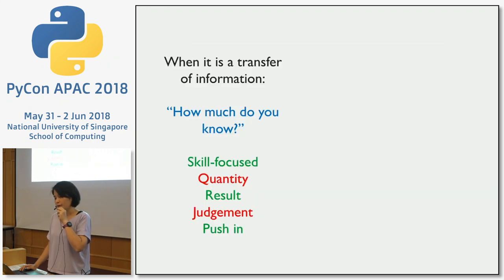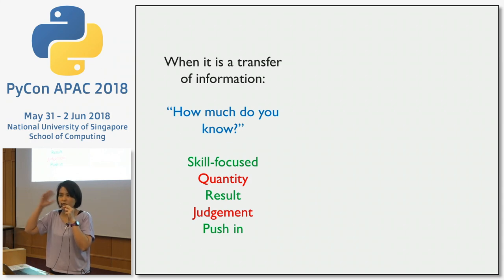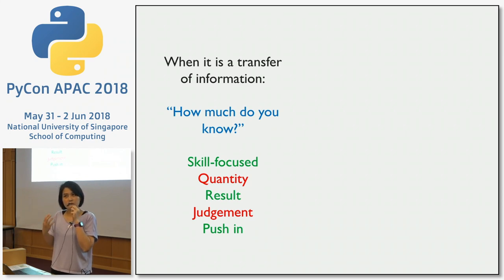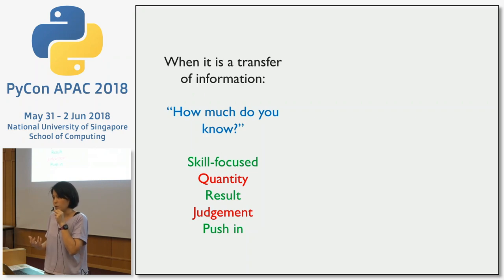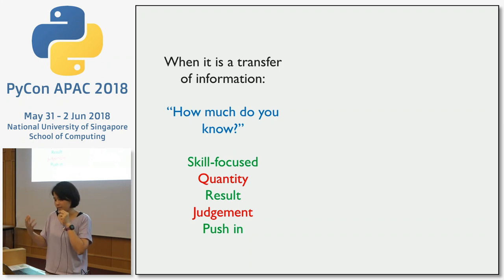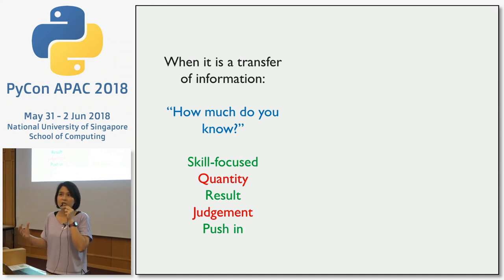If we go with the theory that education is a transfer of information, then teachers and students would ask: how much do I know? With that theory, we become more skill-focused, looking at the quantity of skills and impressions of achievement. We focus on the result, judge that result, and push information into the student.